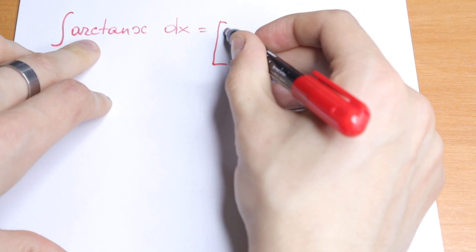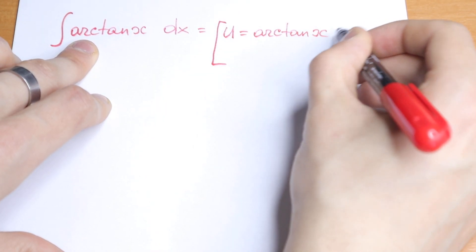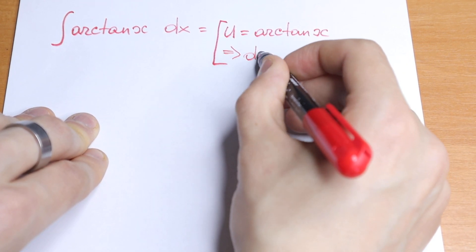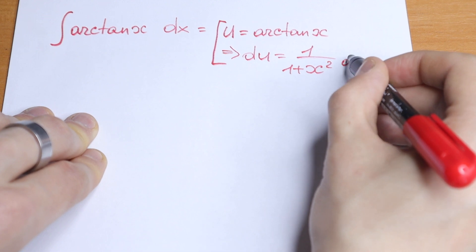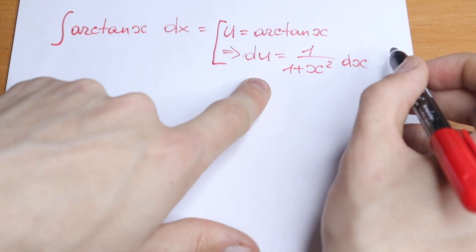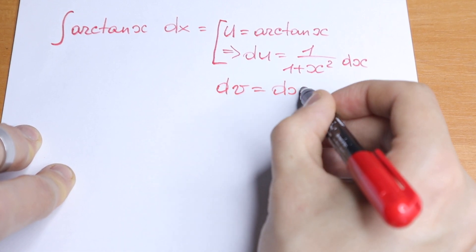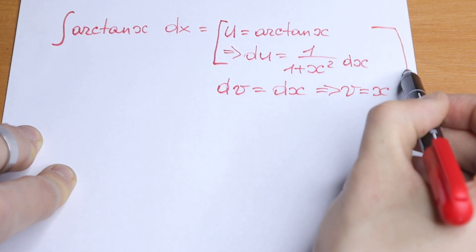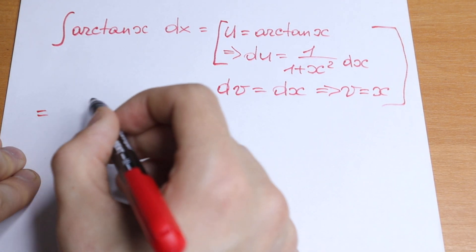I want to show you a really good method. If we put u equal to arctan(x), then we can easily find du, because the derivative of arctan gives us du equal to 1 divided by (1 + x²) dx. And we have dv equal to dx, so v equals x. We will use integration by parts.